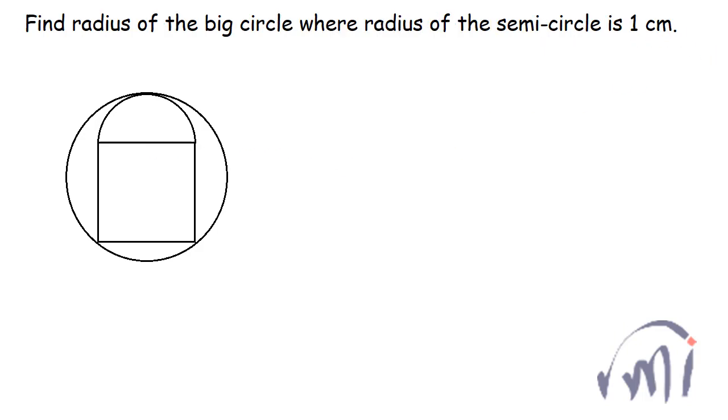This problem can actually be solved using two different methods. At first, if you see this drawing, you can see that this internal figure is actually touching the circle at three distinct points. So if I join these three points then I can actually make a triangle. And we also know that the radius of the circumcircle of a triangle is given as A multiplied by B multiplied by C, where ABC are the sides of the triangle, divided by four times the area of the triangle.